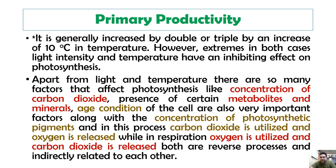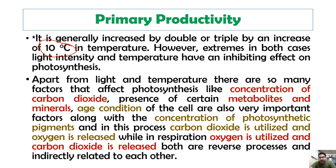Primary productivity is controlled by different factors such as temperature, water, and various minerals. It is generally increased by double or triple with an increase of 10 degrees centigrade in temperature. However, this doubling or tripling of productivity with every 10°C rise in temperature applies only up to a certain limit.